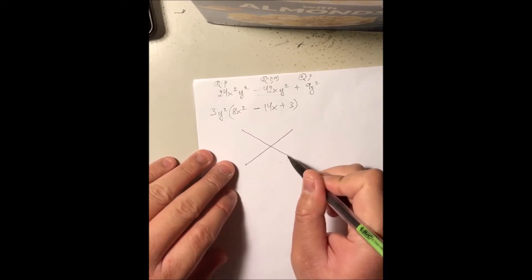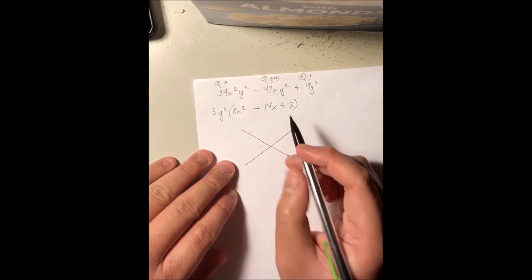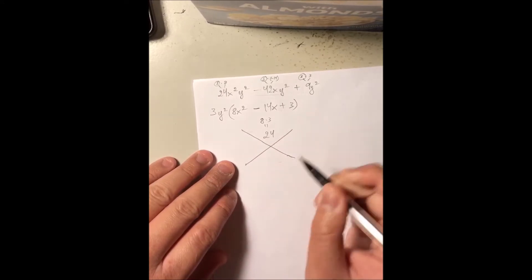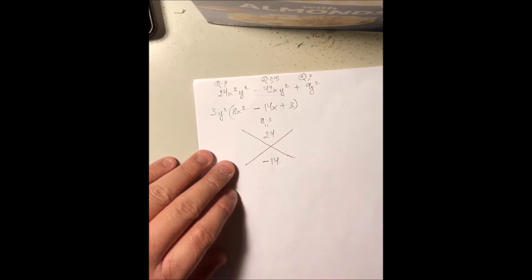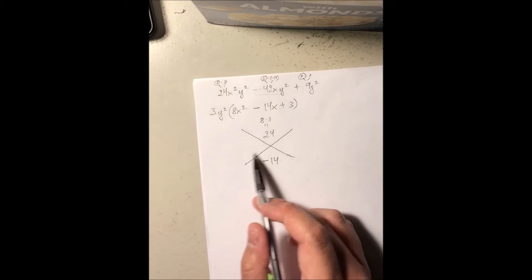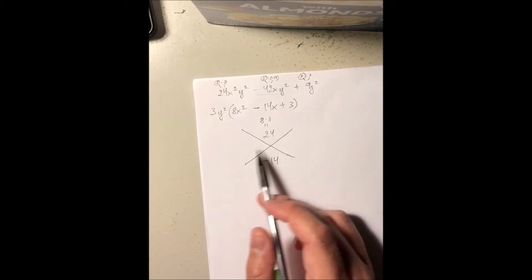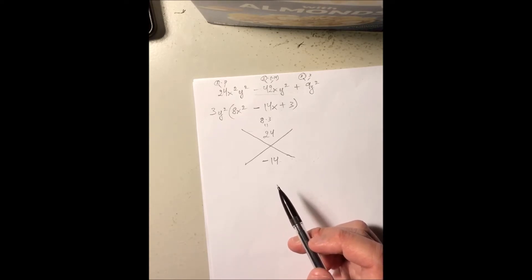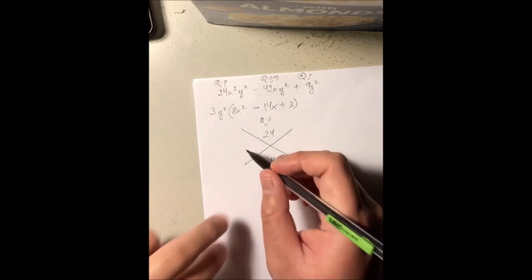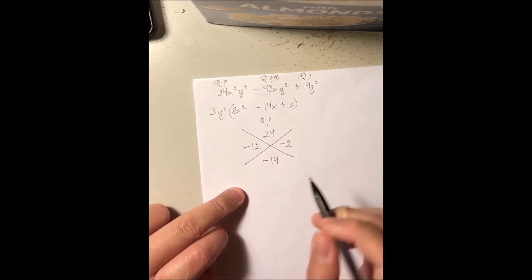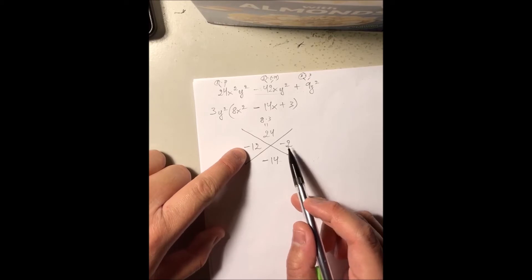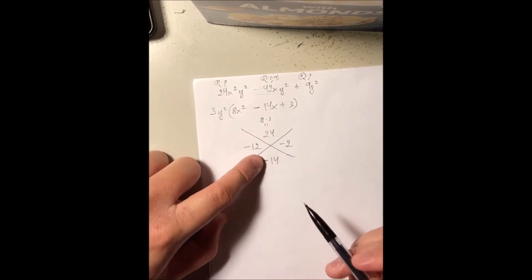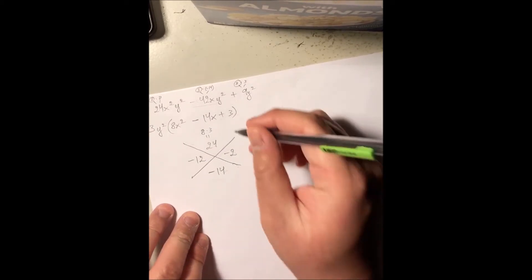Setting up the x-method: the top number is the product of the leading coefficient and the constant, so that's 8 times 3, which is 24. Negative 14 goes at the bottom. We want two numbers that multiply to give 24 but also add to give negative 14. That's negative 12 and negative 2, since negative 12 times negative 2 is positive 24, and negative 12 plus negative 2 is negative 14.